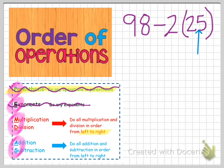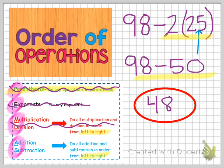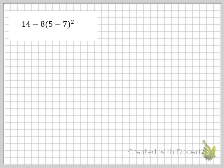A lot of people think M has to come before D all the time, but it doesn't — I do whatever I see first, whether it's multiplication or division. As I scan my problem from left to right I have some multiplication, so I first multiply 2 times 25, giving me 98 minus 50. There's no more multiplication or division, so I move on to addition and subtraction. Looking at 98 minus 50 from left to right, I get the same answer of 48.